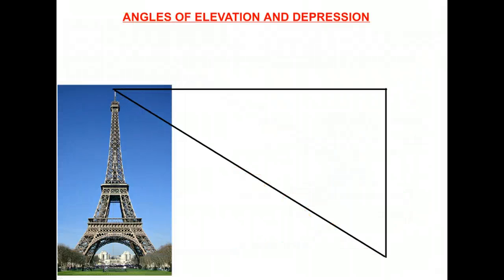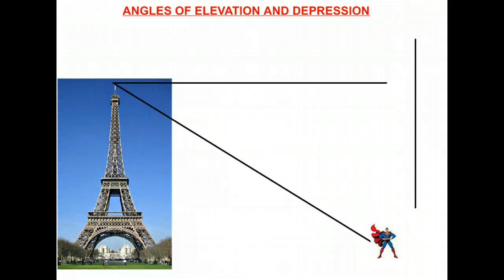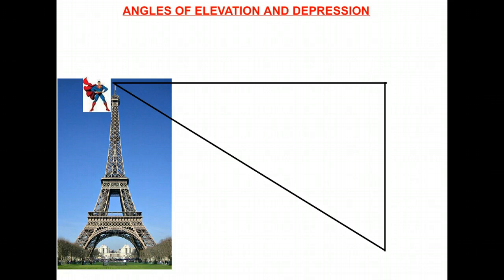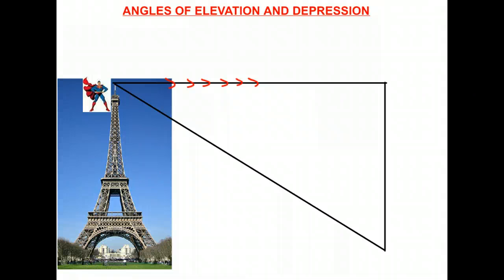Now we're going to have Superman fly to the top of the Eiffel Tower — and here he comes. Superman is now at the top, and he's going to be looking down. Notice we still have a horizontal line, but this time we're putting the horizontal line from Superman's eye. This time he's looking down — let's assume he's looking at Lois Lane, his girlfriend, who would be down below.